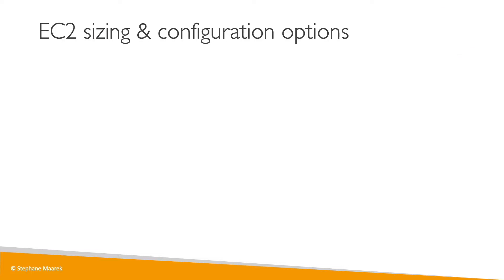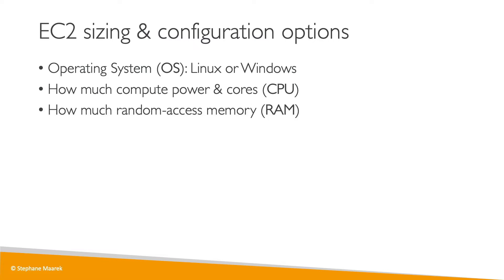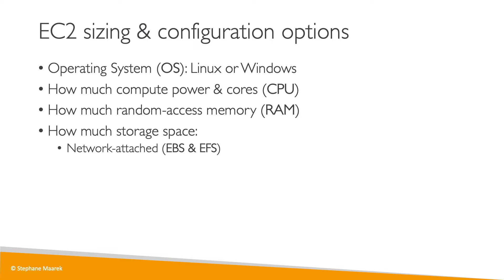So what can we choose for our EC2 instances — our virtual servers that we rent from AWS? We can choose the operating system: Linux or Windows. Note there is no Mac — you cannot rent a Mac from AWS. You can choose how much compute power and cores you want, so how much CPU, and how much RAM. You also choose how much storage space — for example, storage attached through the network via EBS or EFS, or hardware-attached storage as an EC2 instance store.